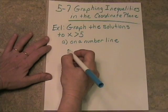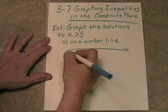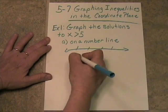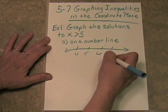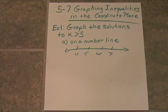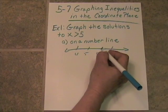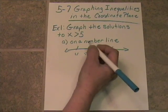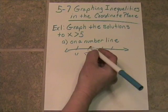Alright, number line 4, 5, 6, 7. Okay, we want all the x's that are greater than 5, so that would be 6, 7, and all the fractions in between, and a little bit bigger than 5, but not including 5.